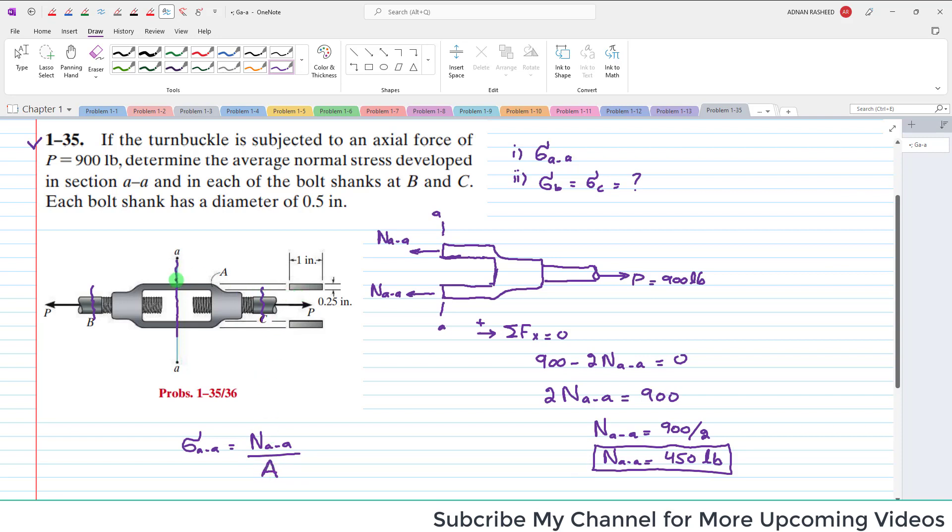You can see here the cross sectional area is given. It is 1 inch width and thickness is 0.25. So the area will be equal to 1 times 0.25 inch, which will be equal to 0.25 square inch. So this is the area.